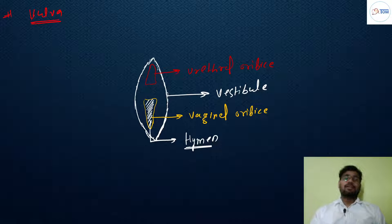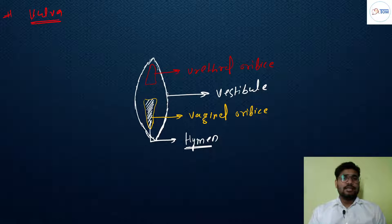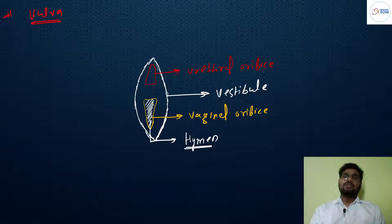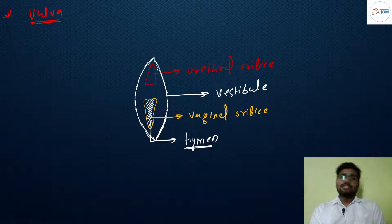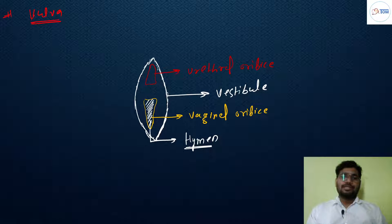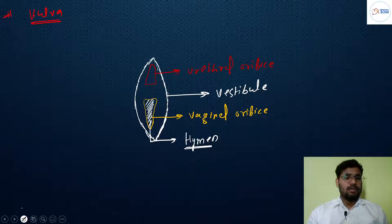The hymen can break due to any physical activity, such as vigorous exercise like horse riding or bicycling, or due to menstrual cramps. It can also break during sexual intercourse. Importantly, it is not necessary that the hymen ruptures only during sexual intercourse — in 80 to 85 percent of cases where the hymen has not ruptured, it doesn't necessarily rupture during sexual intercourse either. It all depends on physical activity.